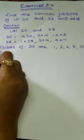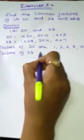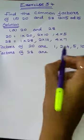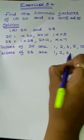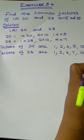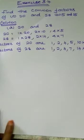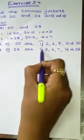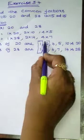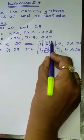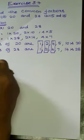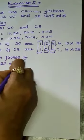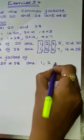Now we have to select the common factors. The common numbers between the two sets are 1, 2, and 4. Therefore, the common factors of 20 and 28 are 1, 2, and 4.